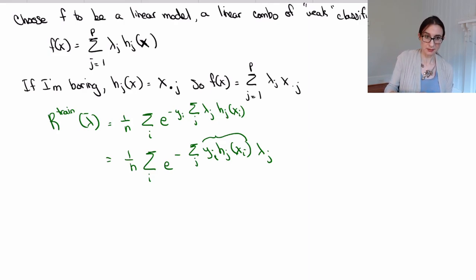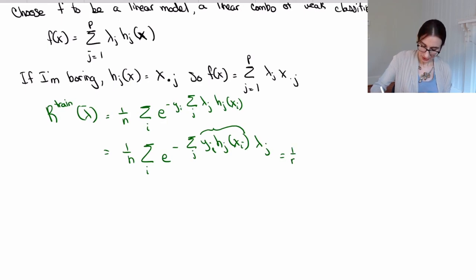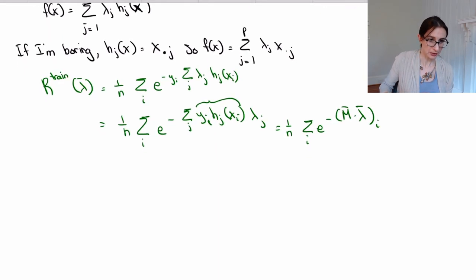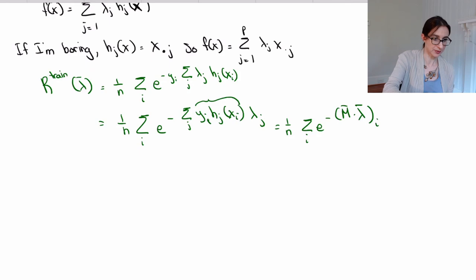And now I'm going to write this sum as a matrix multiplication. So here it is. So this equals one over n, sum over i, e to the negative, m dot lambda. m is a matrix, lambda is a vector, and this means take the i-th component of that dot product.